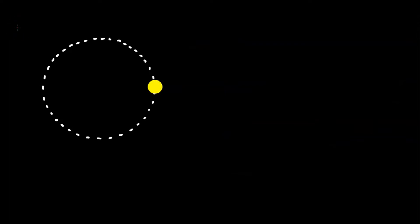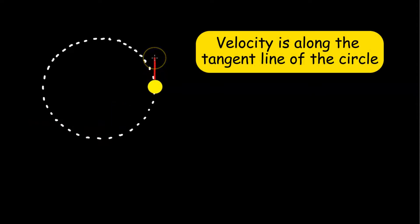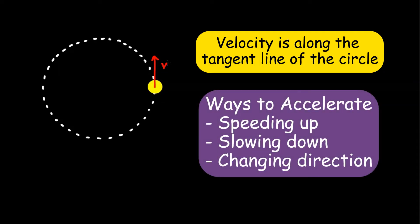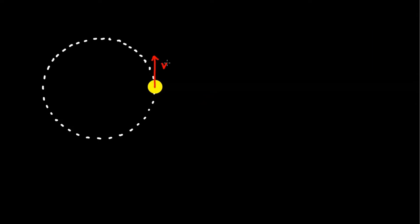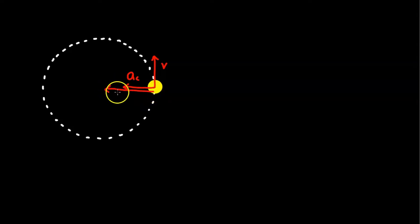Now let's look at the directions of the vectors. As this ball goes around in a circle, its velocity is in the direction it's moving — tangent to the circle. It also has an acceleration, because it's changing direction. We assume uniform circular motion, meaning constant speed. The acceleration is directed towards the center, and we call this the centripetal acceleration. The net force is also towards the center, since net force is always in the same direction as acceleration.